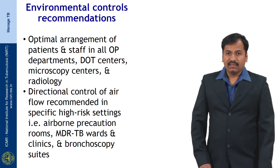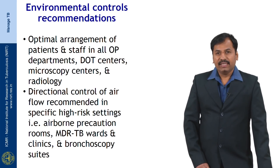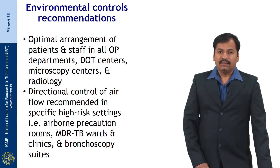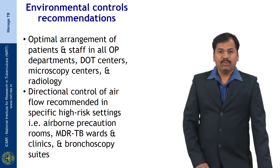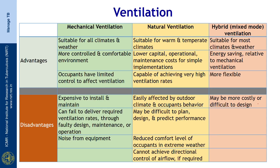An important and easily implemented aspect is the optimal arrangement of patients and staff in all outpatient departments, directly observed treatment centers, microscopy centers, and radiology departments. Directional control of air flow is recommended in specific high-risk settings such as airborne precaution rooms, MDR-TB wards and clinics, and bronchoscopy suites. There are three types of ventilation: mechanical ventilation, natural ventilation, and hybrid or mixed-mode ventilation, each with certain advantages and disadvantages.